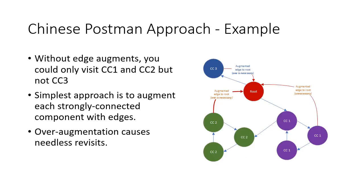As an example of the Chinese Postman approach to transition inspection, here we see three strongly connected components: SCC1, SCC2, and SCC3. We can visit SCC1 and then SCC2, but we have no way of getting back to the root to visit SCC3, so we need at least one augment. However, it's difficult to know what augments we need ahead of time, so the simplest approach is to add one augment per connected component. But over-augmentation causes needless revisits because there's no way of making these optional.